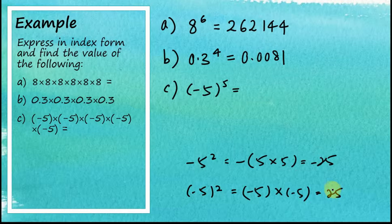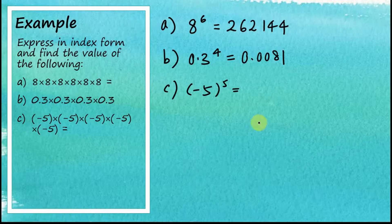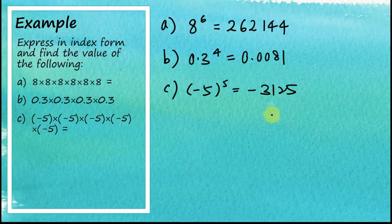Therefore, for index numbers with negative numbers, we must include the brackets. Using a calculator, you should get negative 3125 for (-5)^5. That's how we find the values of an index number and how we write a number in index form.